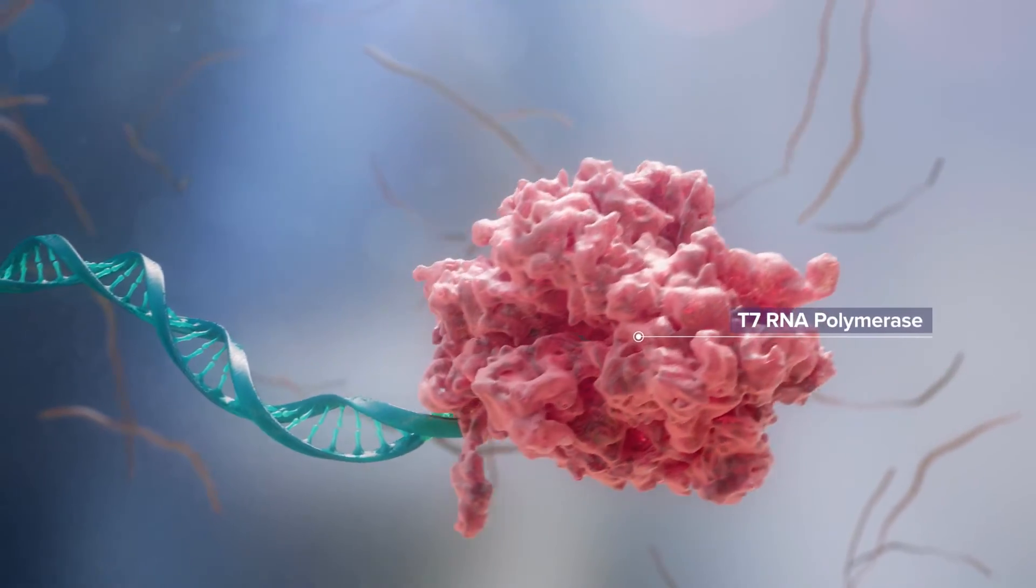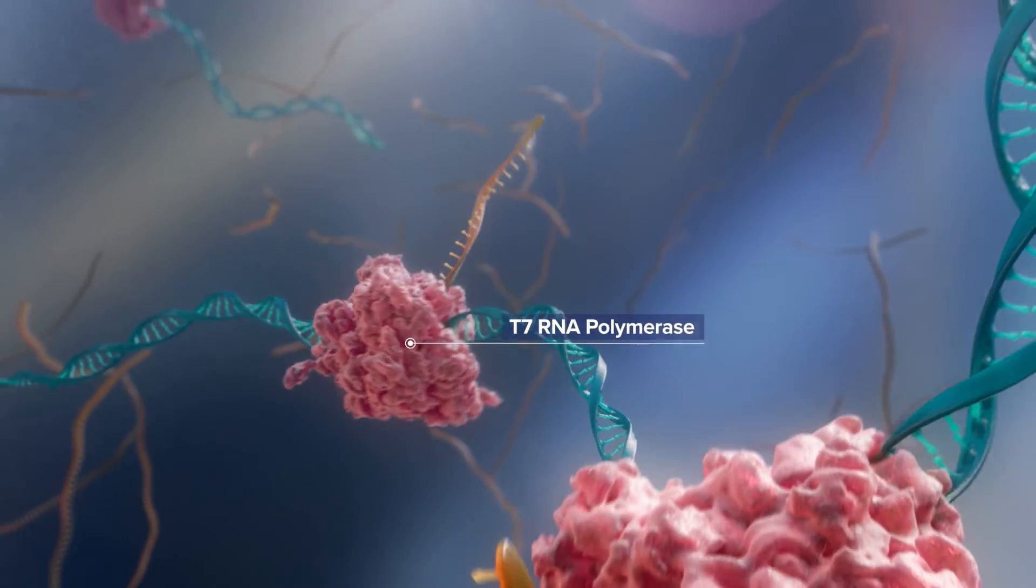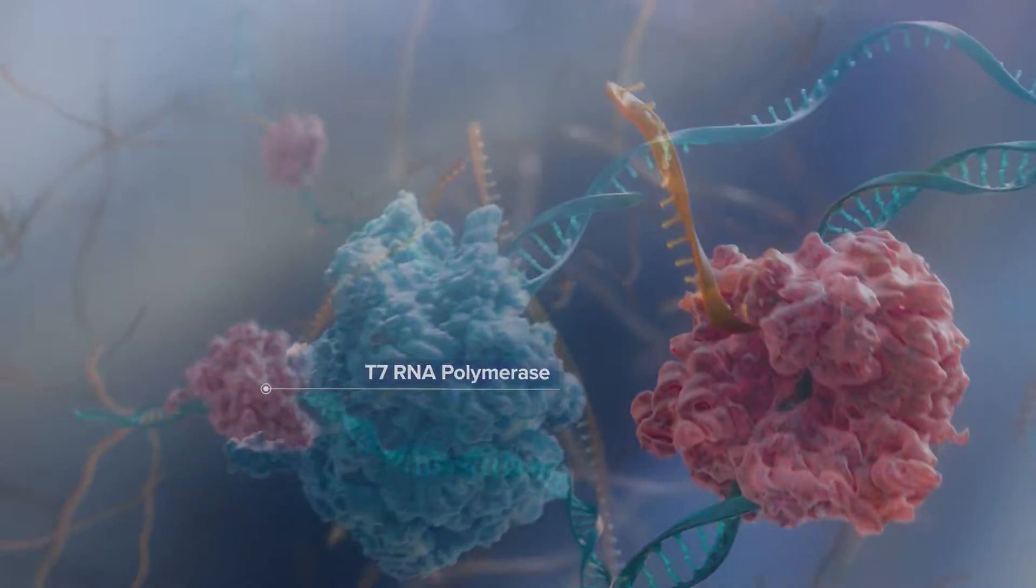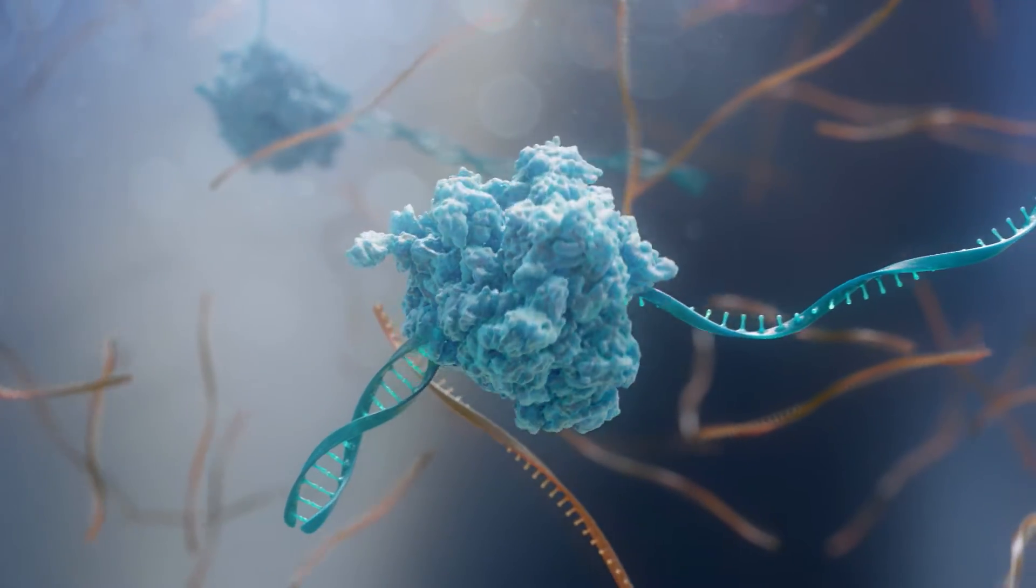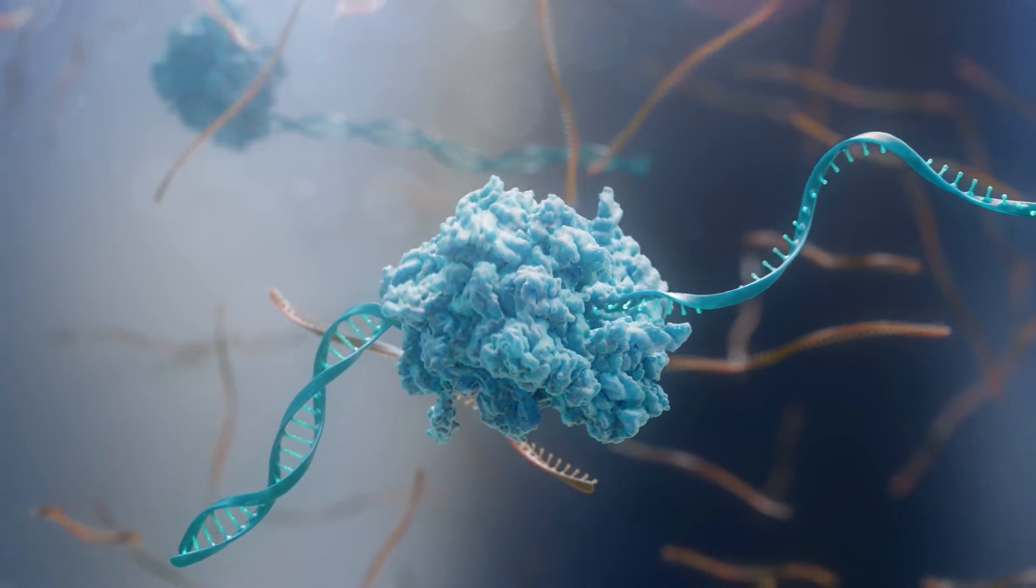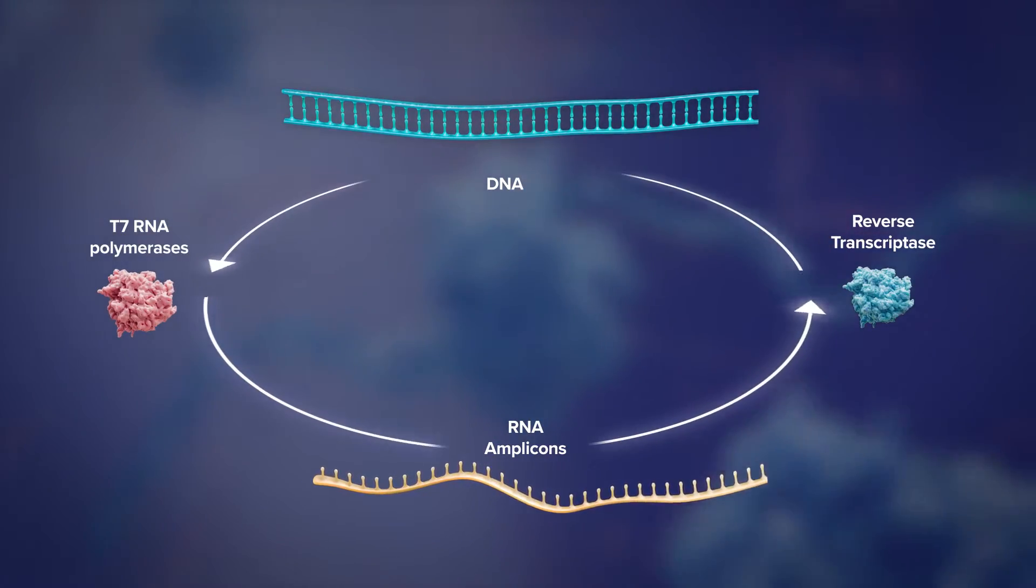This cDNA template is transcribed by T7 RNA polymerase to produce multiple RNA amplicons, resulting in an amplification cycle where each amplicon is used to create new cDNA molecules, which in turn generate more RNA amplicons.